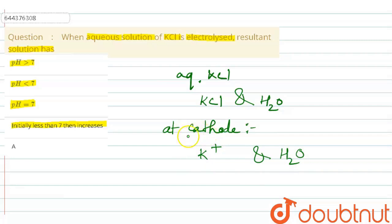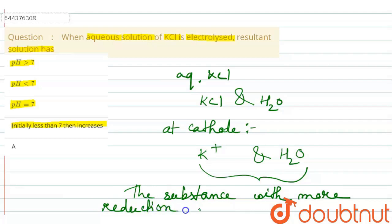At cathode, what happens? Reduction occurs. There will be competition between potassium plus and water to get reduced. Which substance will get reduced? The substance with more reduction potential gets reduced.